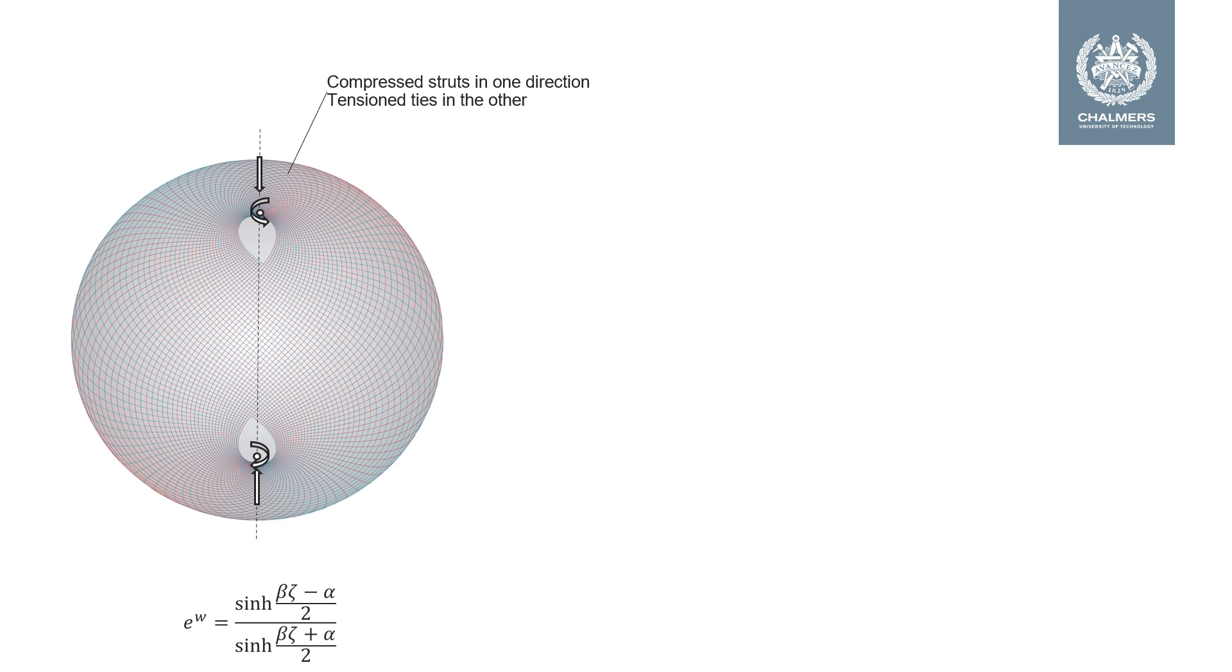The principal stress trajectories are given by the equation shown below the sphere. The real constant alpha controls the position of the wrenches, and if alpha tends to infinity, the wrenches are applied at the north and south poles. The complex constant beta controls the ratio between the actual force and the twisting moment.